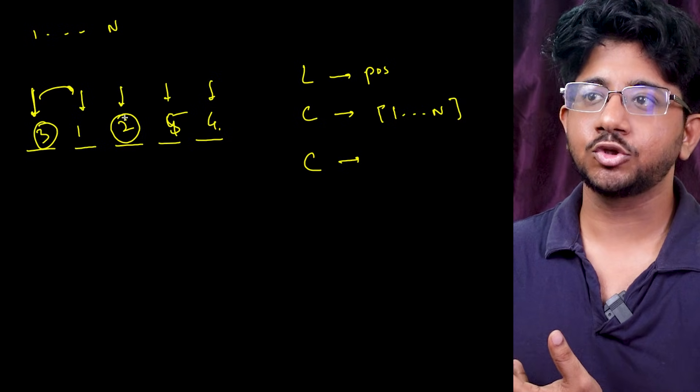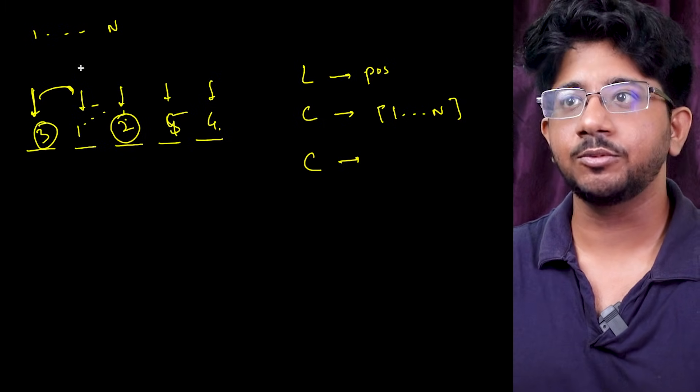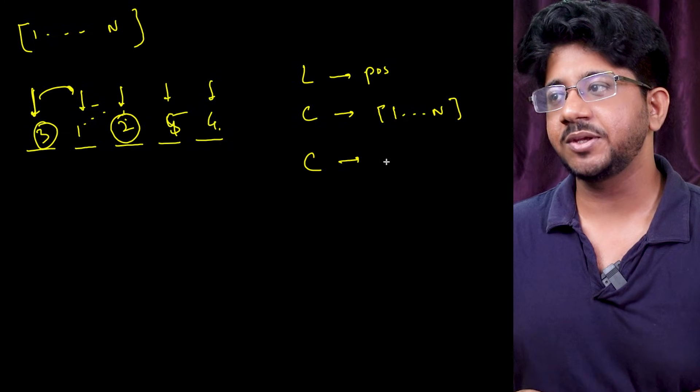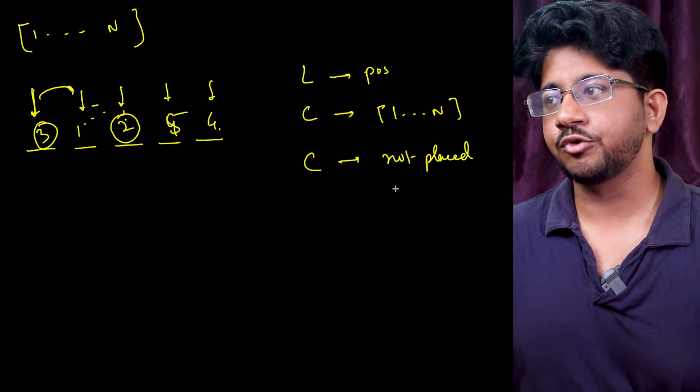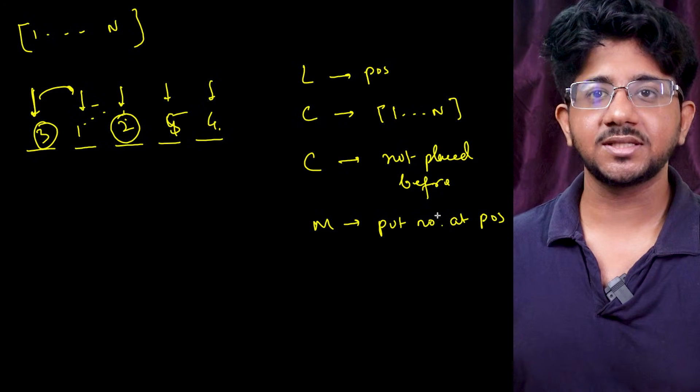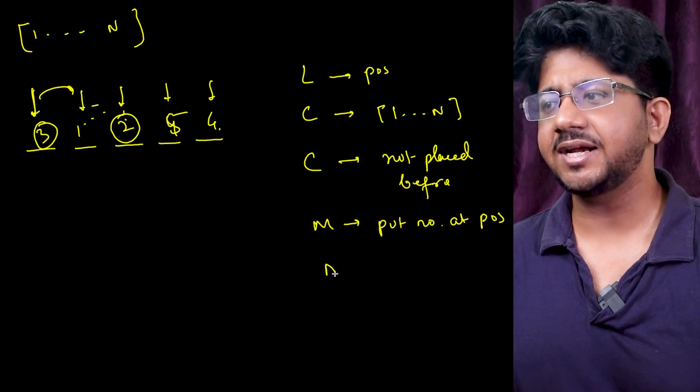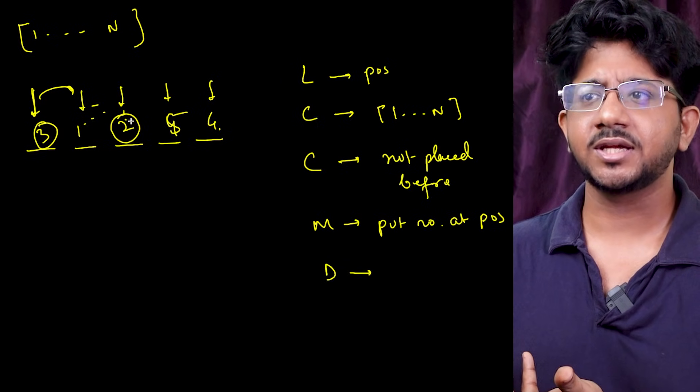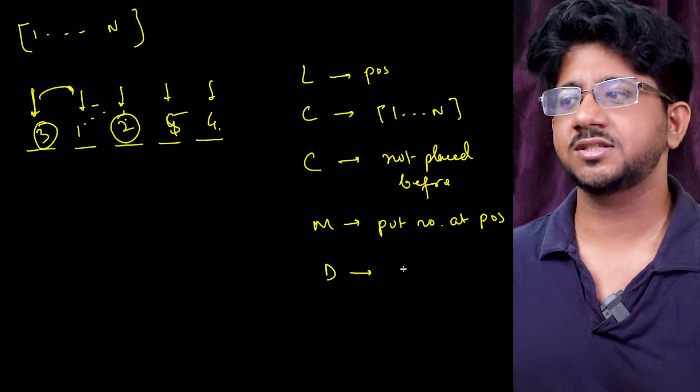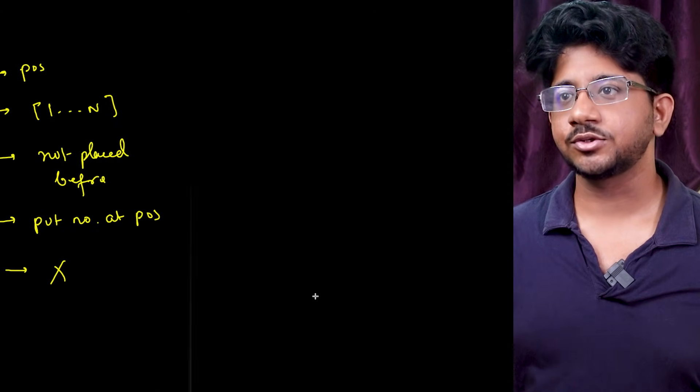Choice will be in the range 1 to n. Check will be it should not have got placed before right. Because if you are placing something here it should not have been placed before or else you are repeating a particular number and it's not a permutation of 1 to n. So check it will be not placed before. Move basically you put the number at whatever position you were placing. Go to the next level. Come back and remove. That's the standard thing. And decide here also since if none of the positions are equal to anything before it it's always generated correctly. So you don't need to check anything.